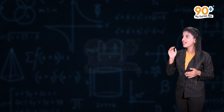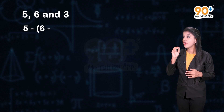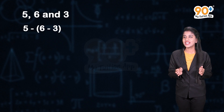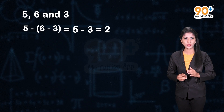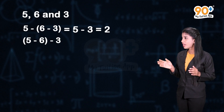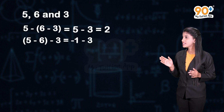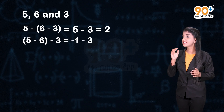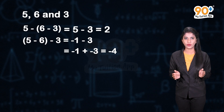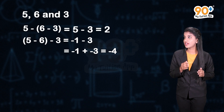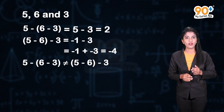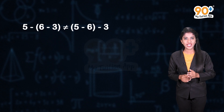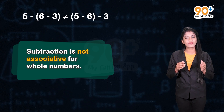Now let us see whether subtraction is associative for whole numbers or not. Let us consider three whole numbers 5, 6 and 3. What is (5 - 6) - 3? It is 5 - 3, which is equal to 2. Now what is 5 - (6 - 3)? That is equal to -1 - 3, which can also be written as -1 + (-3), that is equal to -4. So we can clearly observe that (5 - 6) - 3 is not equal to 5 - (6 - 3). So we can say that subtraction is not associative for whole numbers.